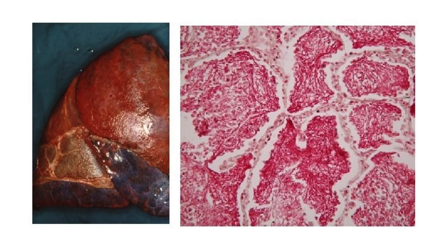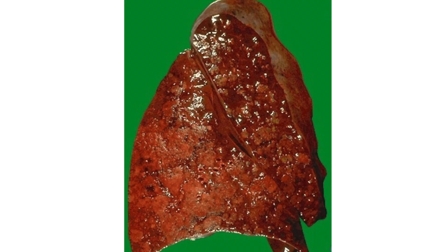The second phase of red hepatisation lasts for two to three days. As the name suggests, the lungs adapt to look more like a liver — the affected segment becomes red and firm, and the cut surface looks liver-like with an airless, dry, granular appearance.